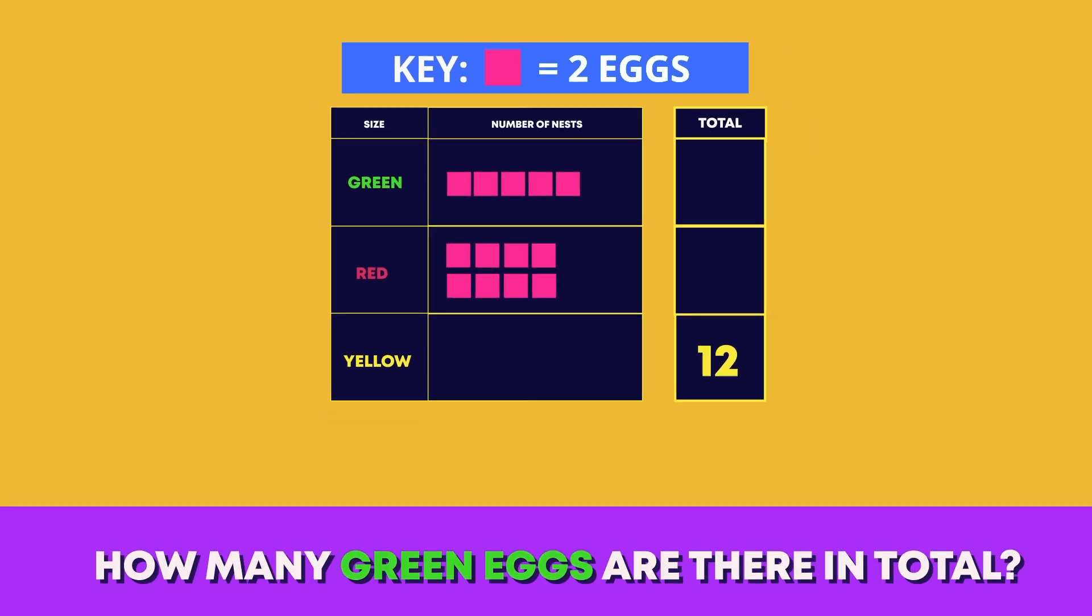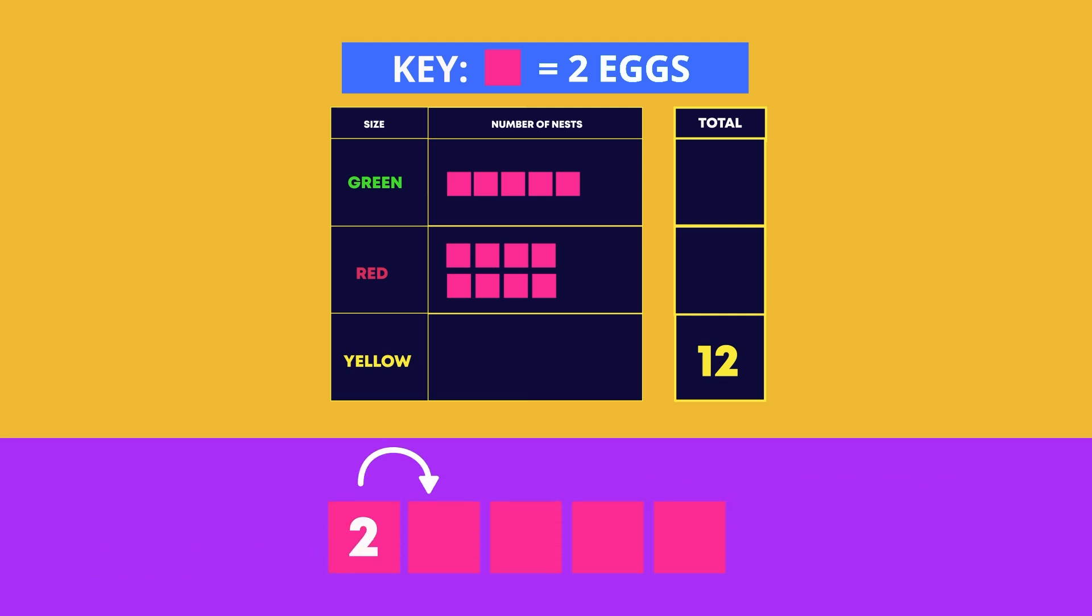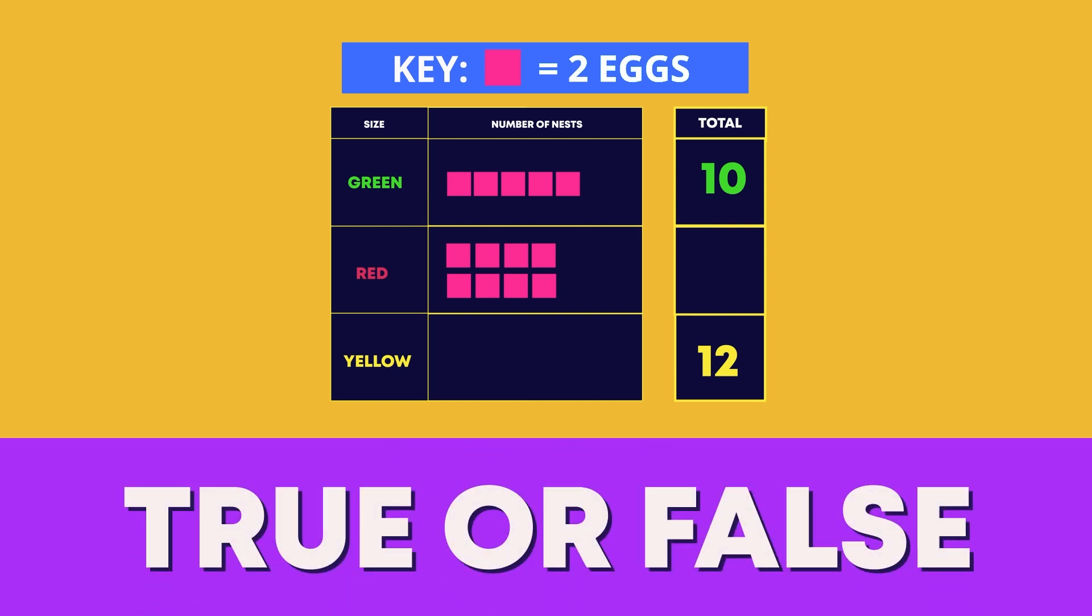How many green eggs are there in total? Top tip: skip count in twos. There are two, four, six, eight, ten green eggs. Good job! Now let's play true or false.